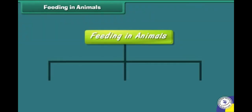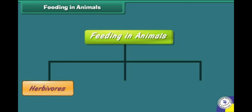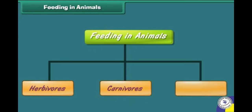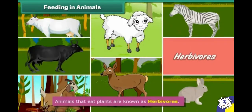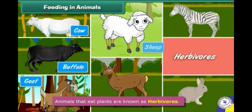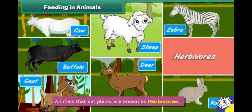On the basis of the type of food, animals are of three types: herbivorous, carnivorous, and omnivorous. Animals that eat plants are known as herbivorous. Examples include cow, buffalo, goat, sheep, deer, zebra, and rabbits.